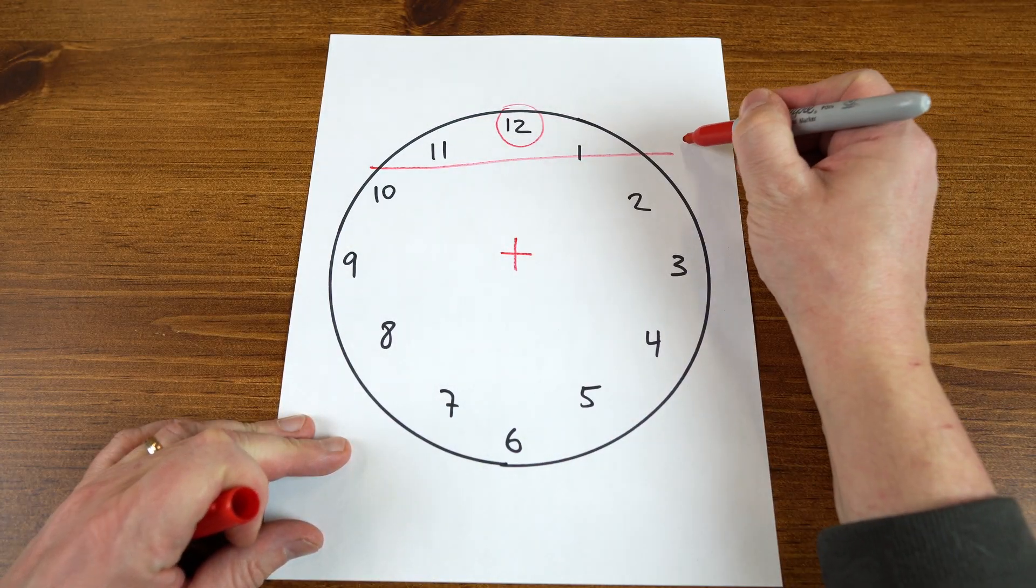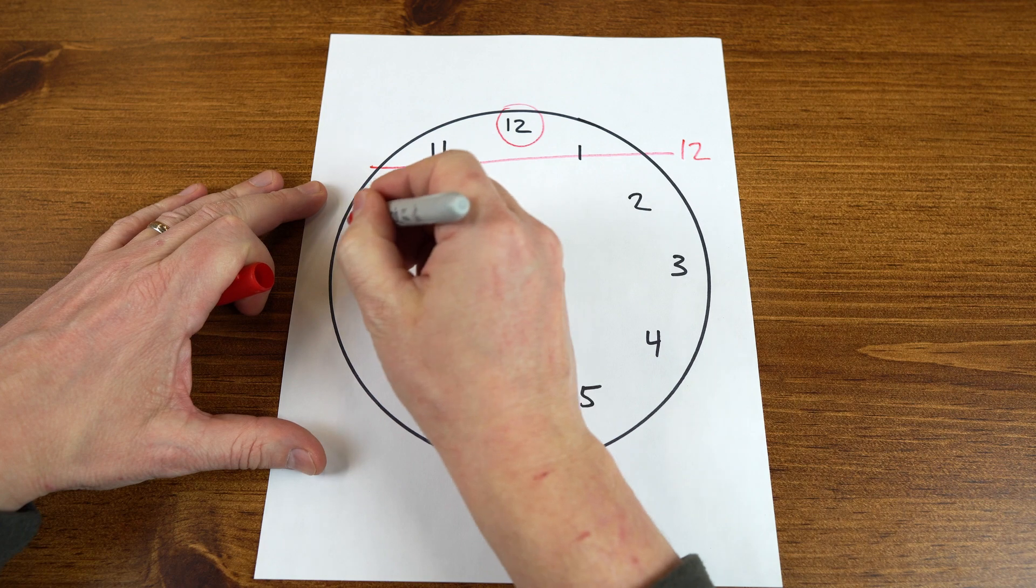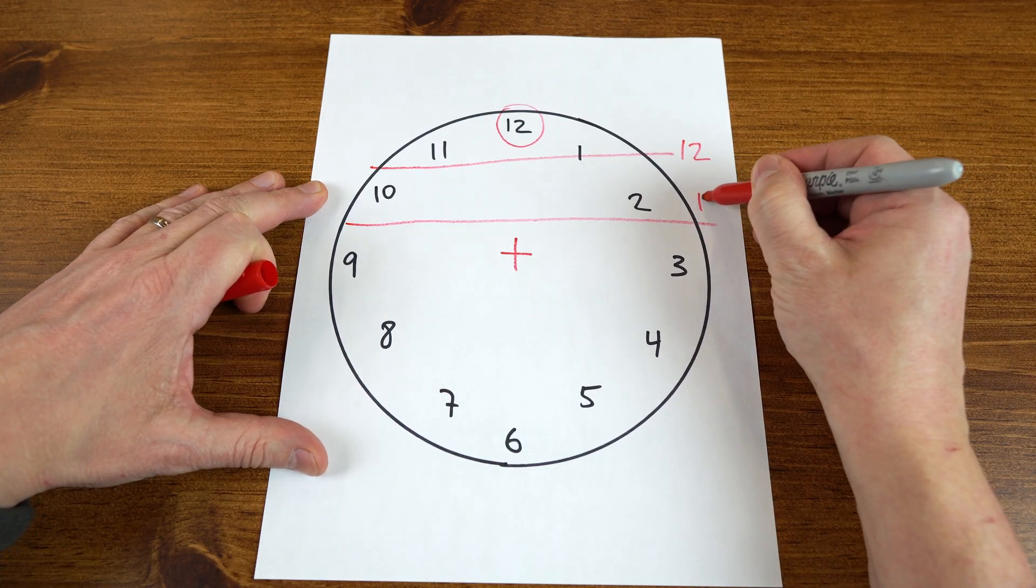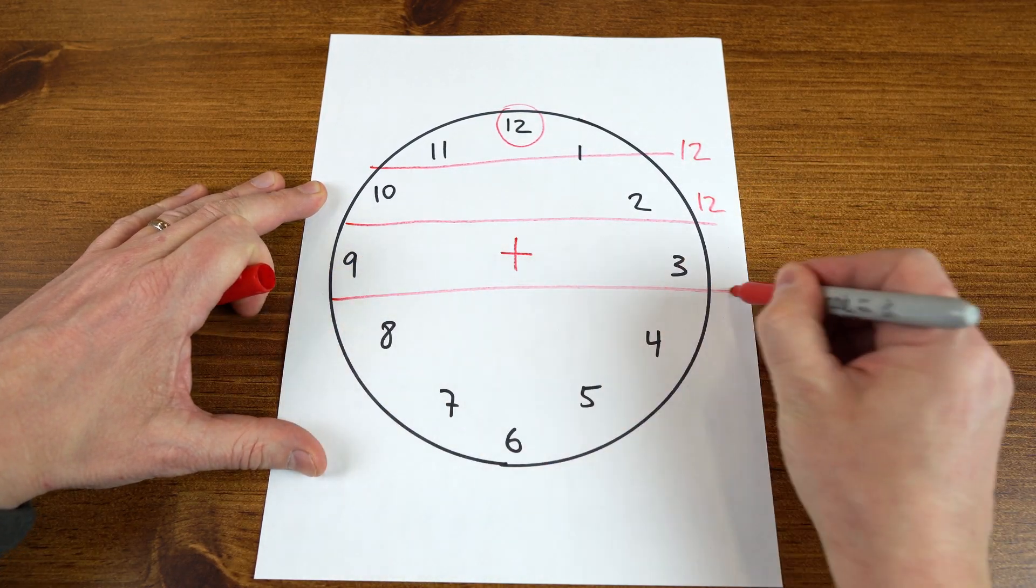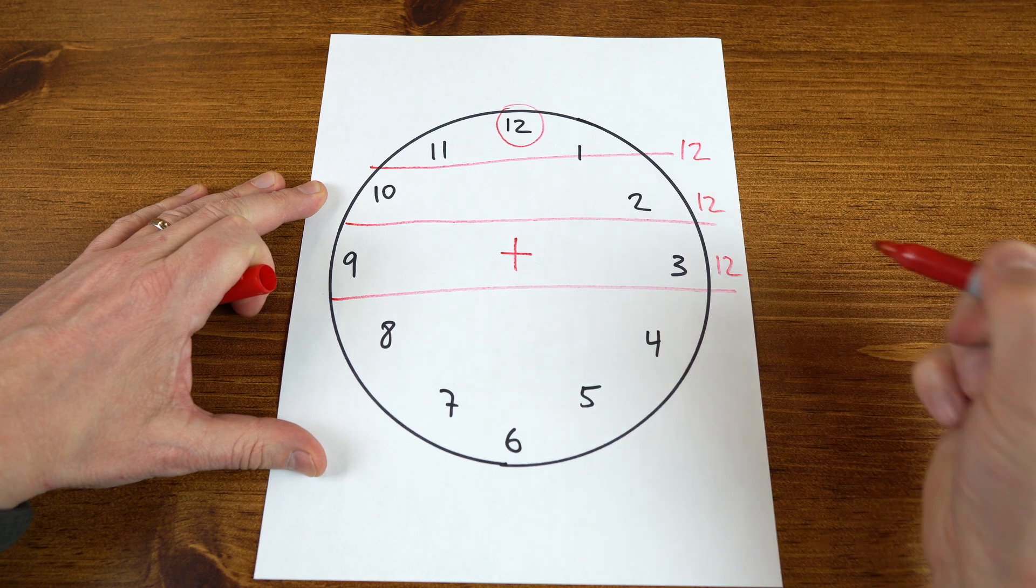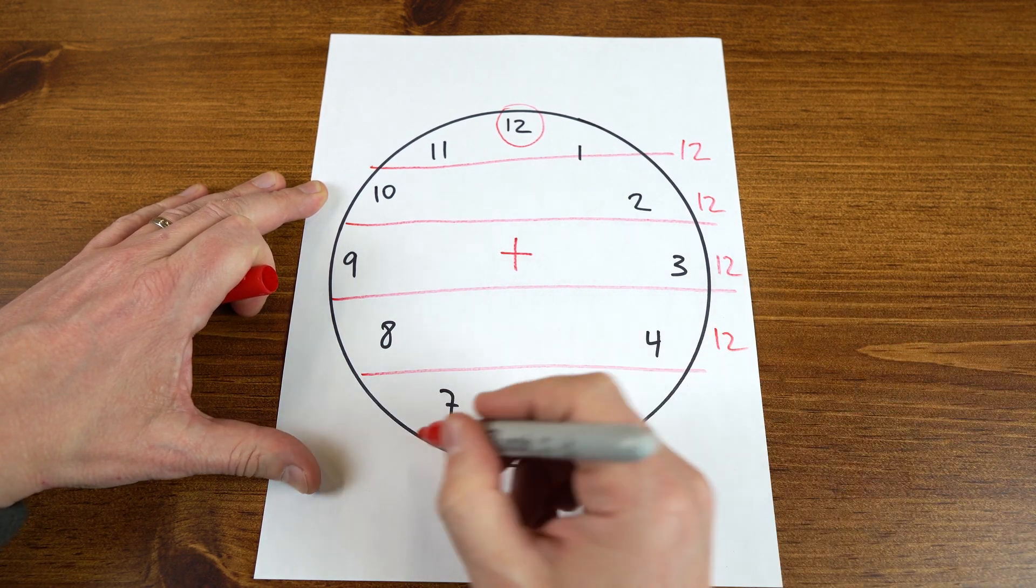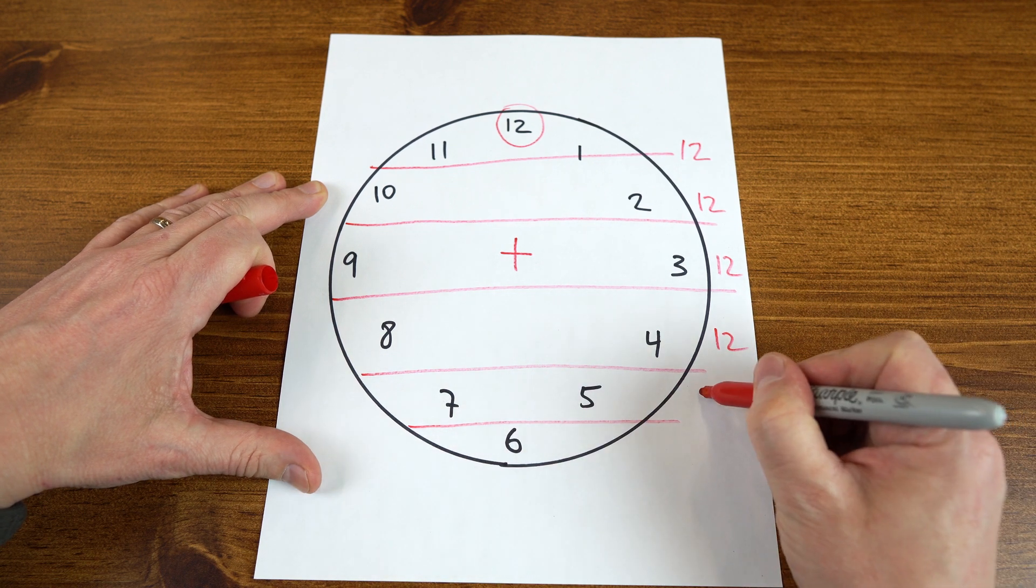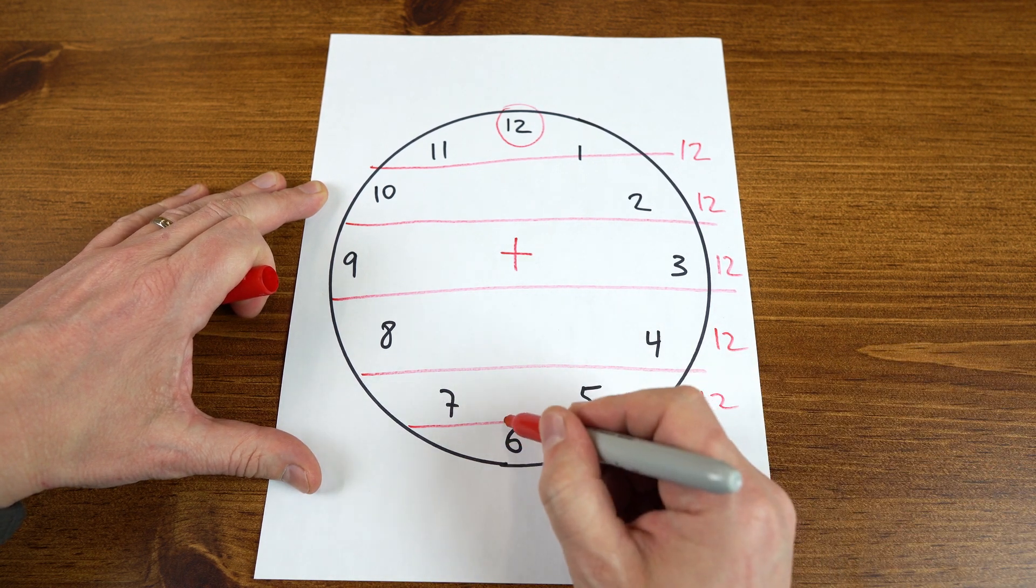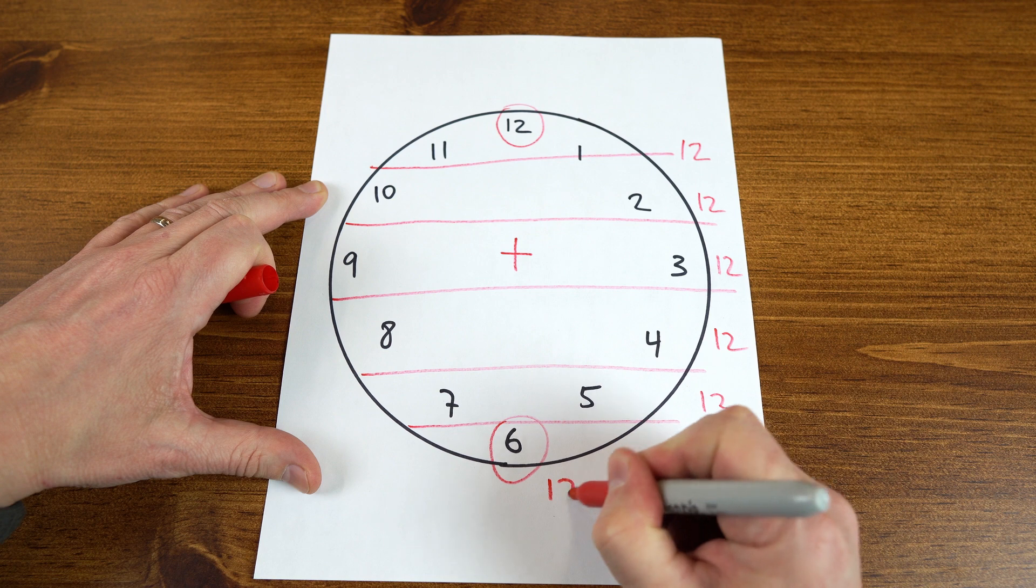11 plus 1 is 12. 10 plus 2, 12. 9 plus 3, 12. 8 plus 4, 12. 7 plus 5, 12. And if you do 6 plus 6, it's going to be 12 as well.